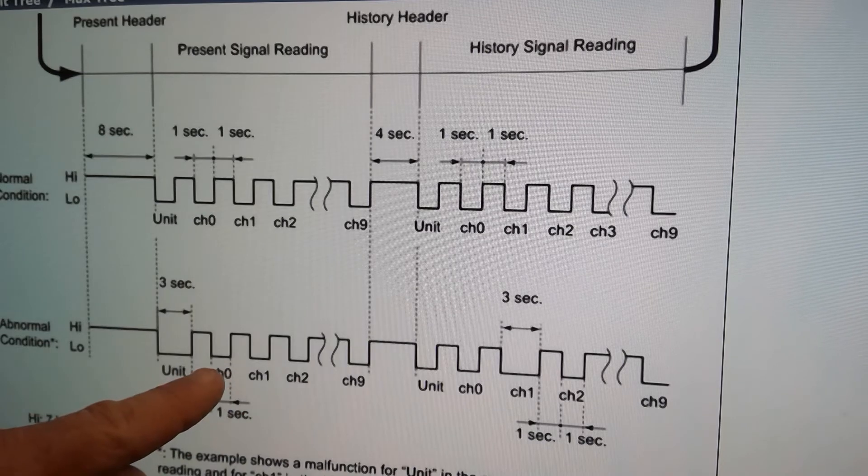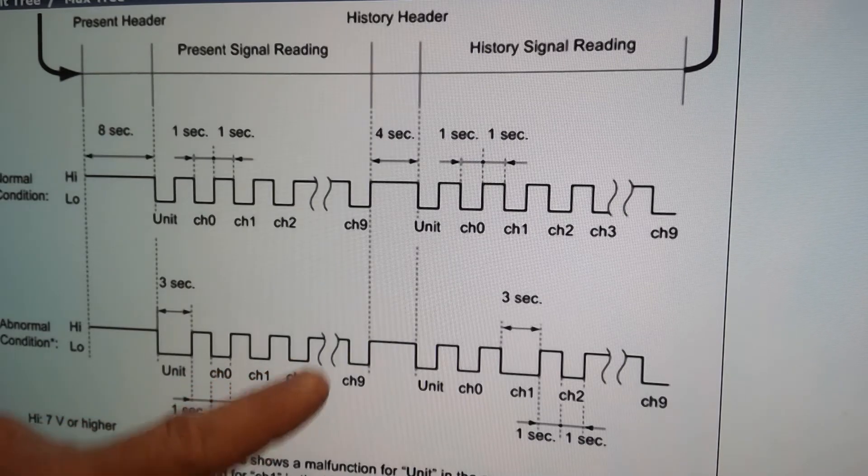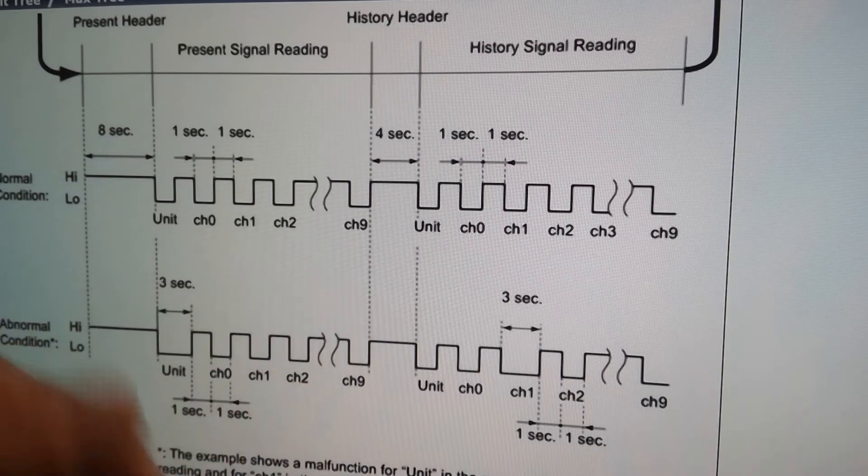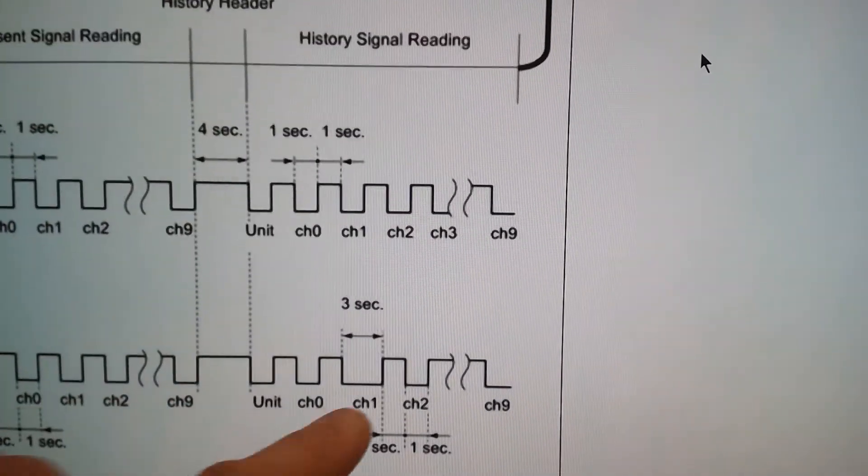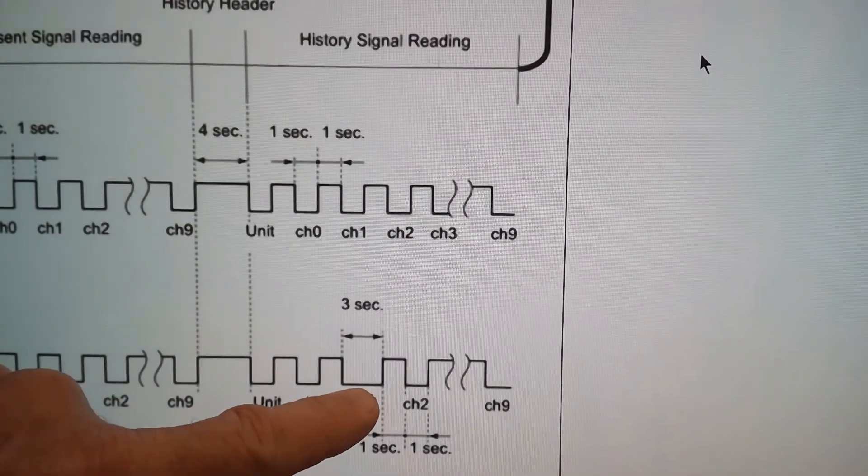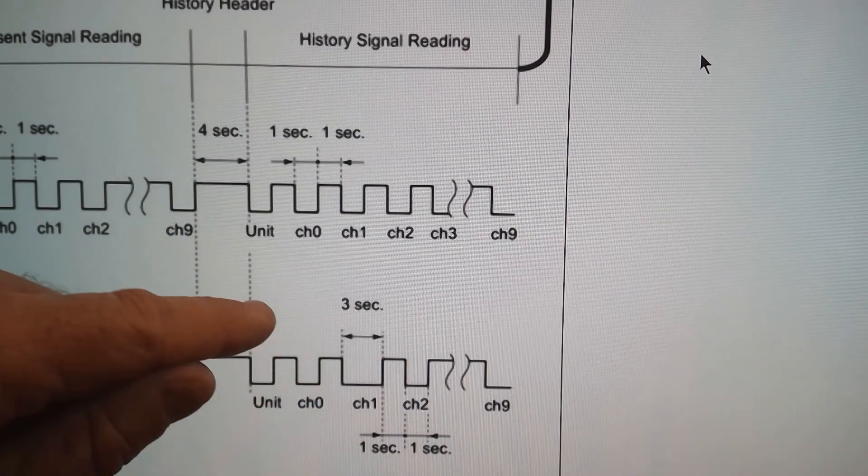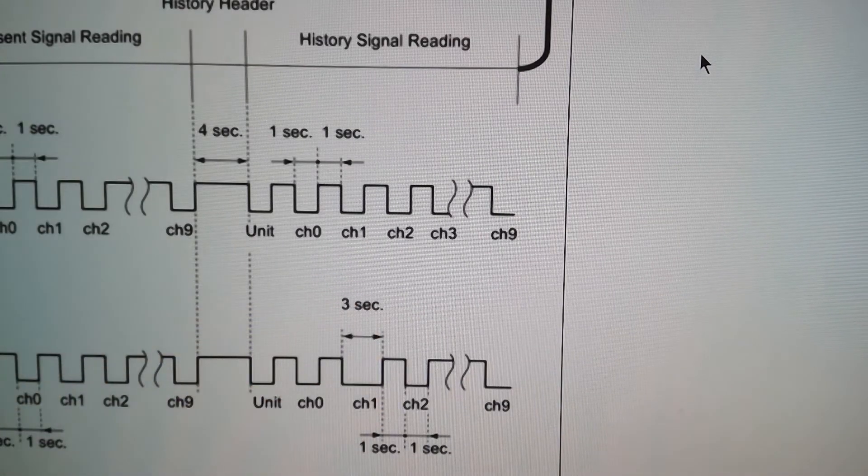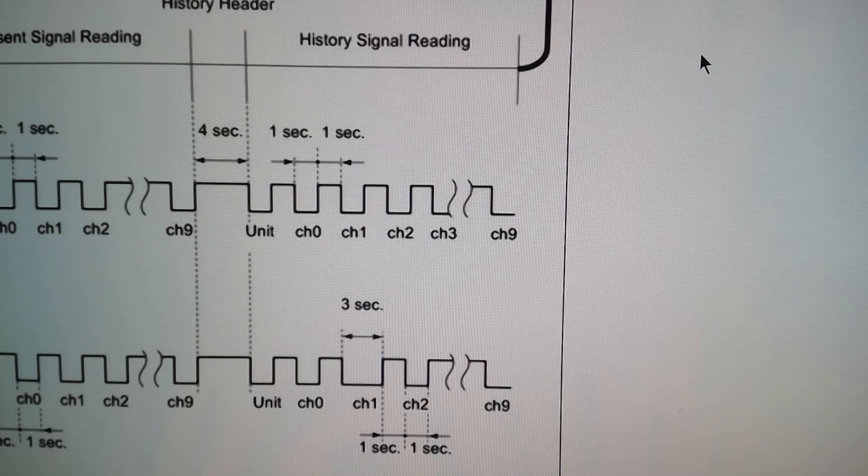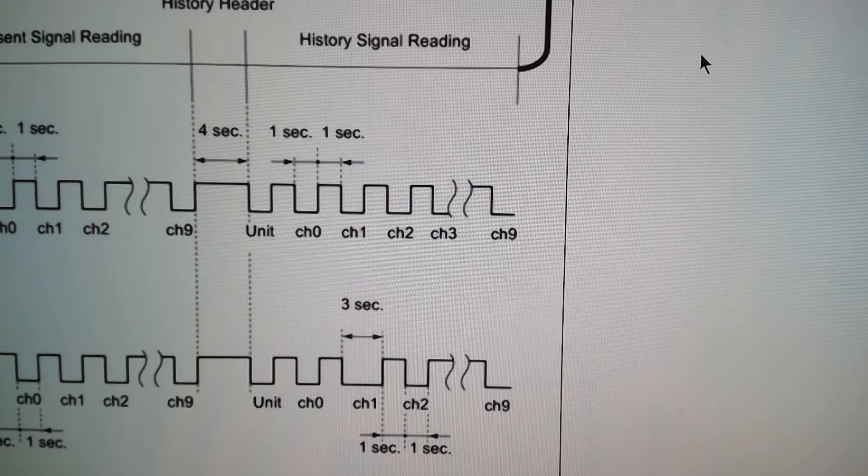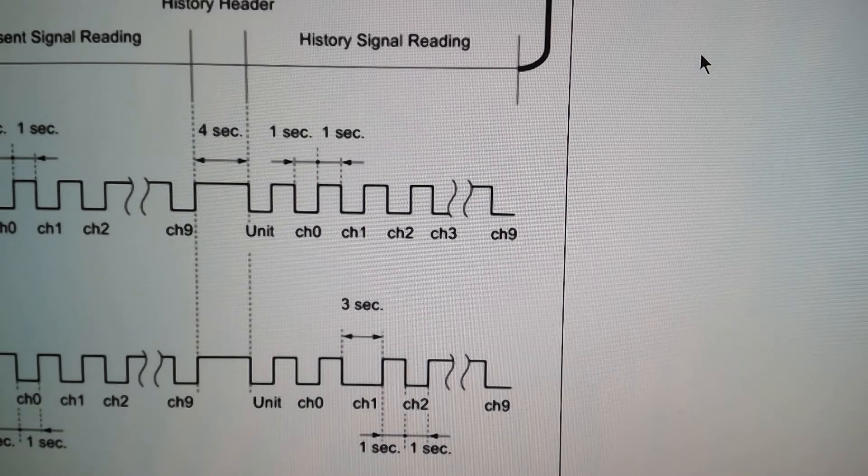Then you go to channel zero, one, two, and you'll see channel six stays on zero for three seconds. And that indicates the fault that I'll show you: a direct short in the condenser fan body.